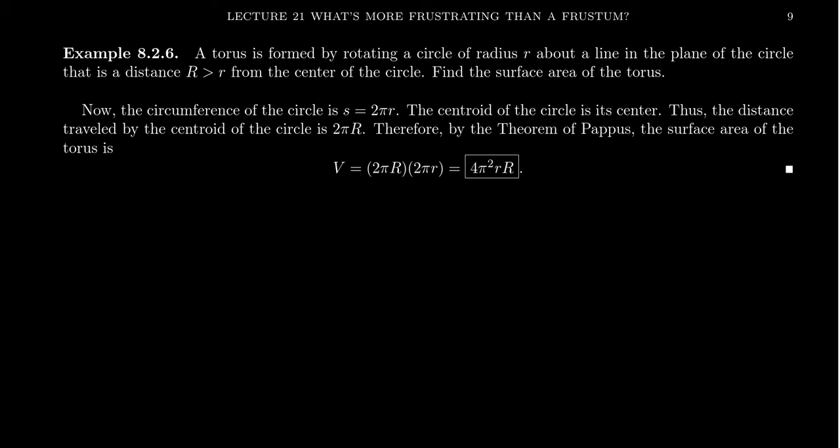A torus is formed by rotating a circle of radius little r about a line in the plane of the circle that is a distance capital R, which should be bigger than little r, from the center of the circle.